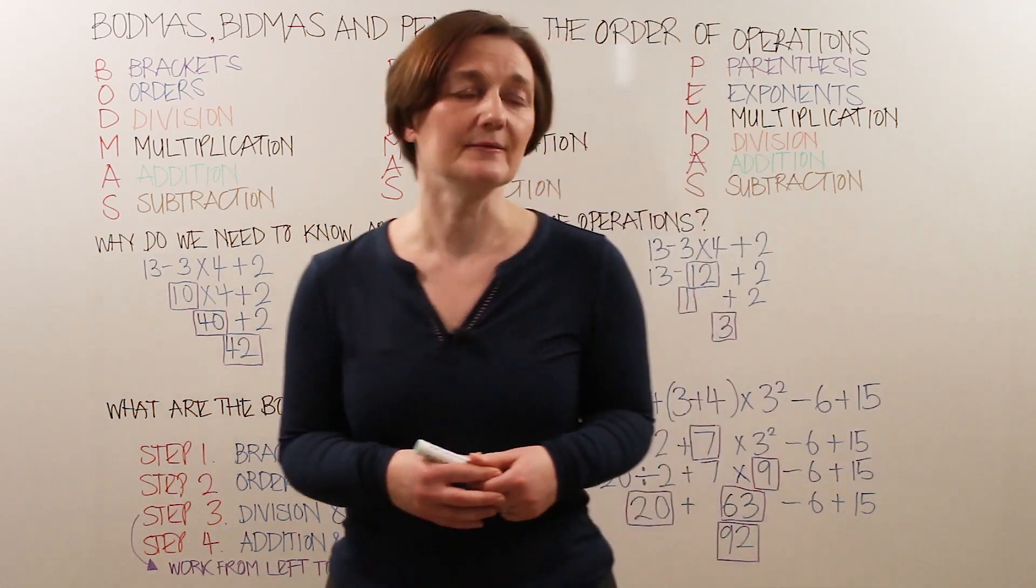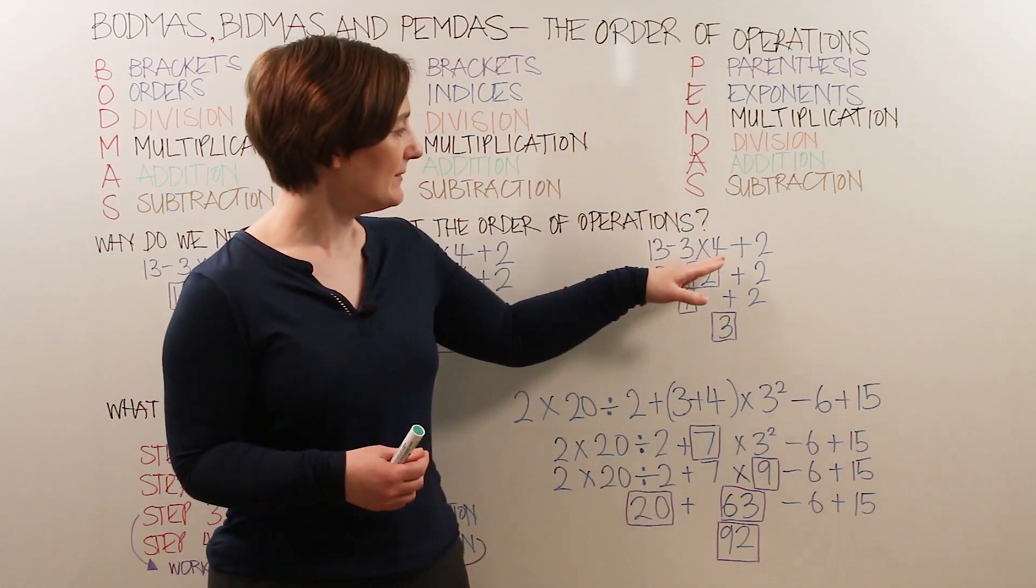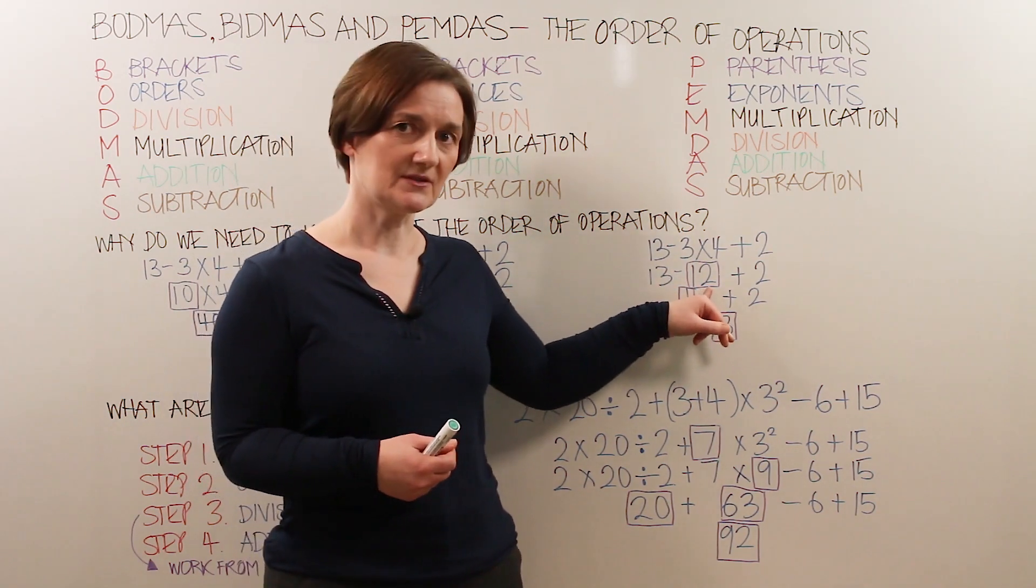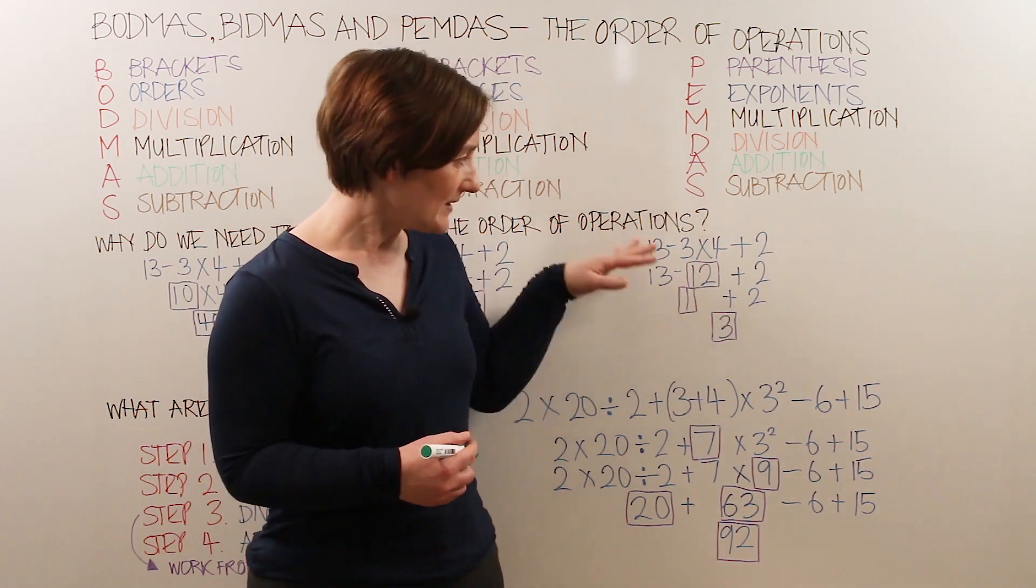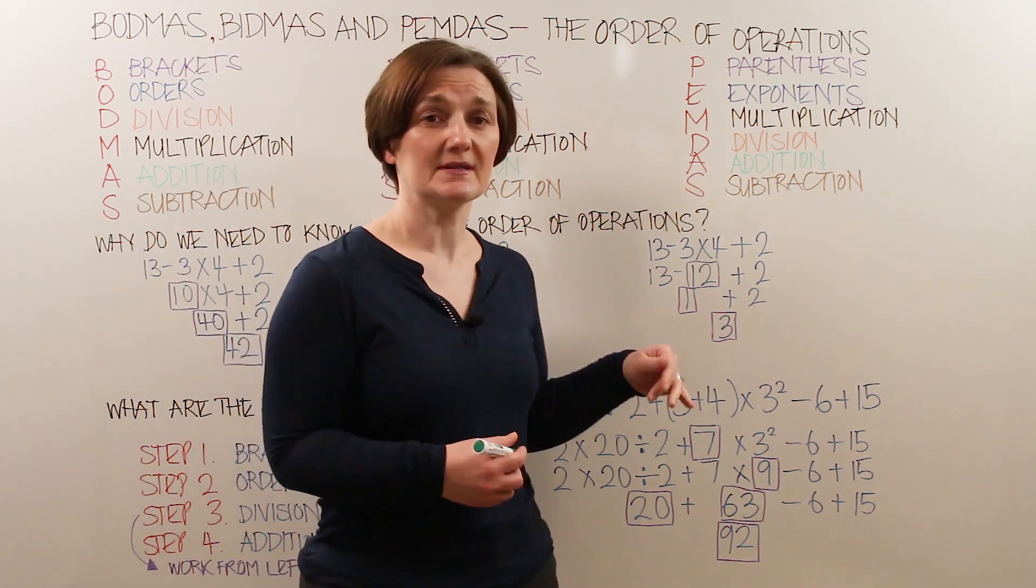So if we move to this part of the problem first, we've got the 3 multiplied by the 4, which gives us 12. There's no other division or multiplication, so we can move to step 4, which is addition and subtraction.